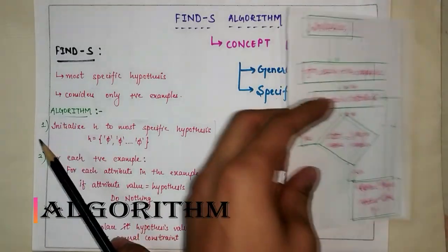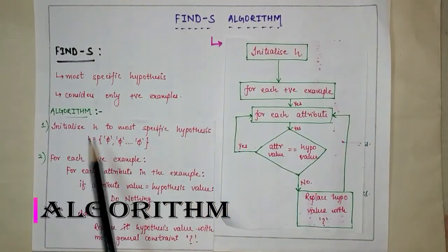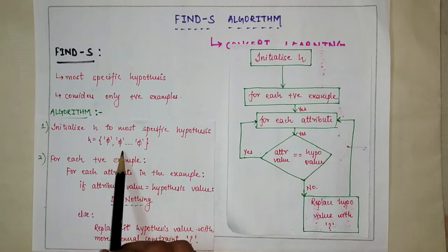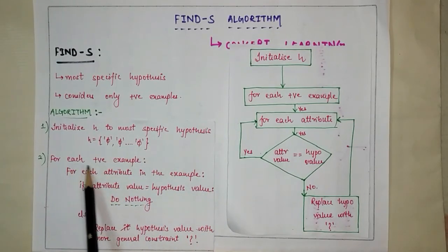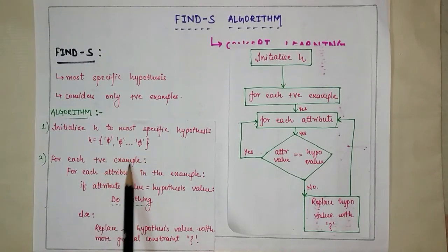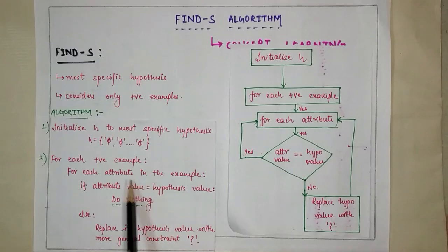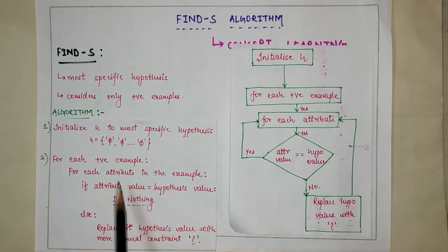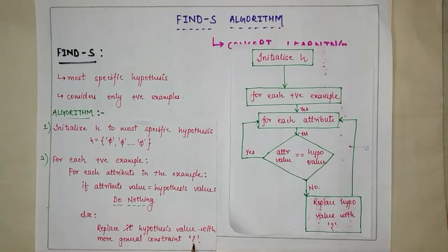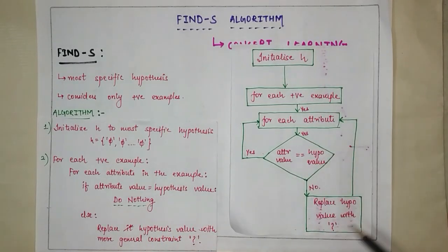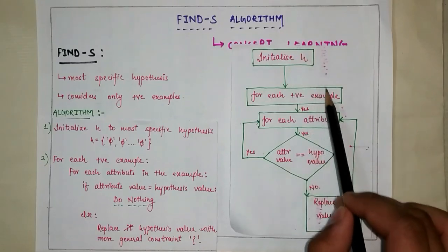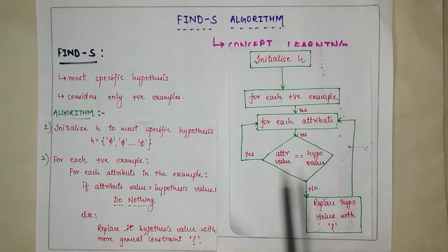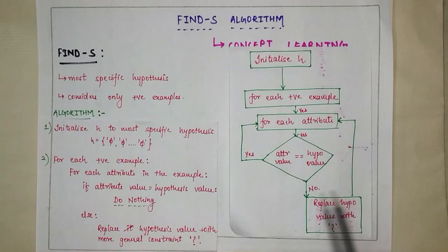Let's understand the Find-S algorithm steps. The first step is to initialize your hypothesis to the most specific hypothesis, which means initializing it to phi (φ), where the number of phis depends on the number of attributes. Then, for each positive example, consider each attribute and check whether the attribute value equals the hypothesis value. If it is equal, do nothing. If it is not equal, replace it with a question mark — the most generalized term.